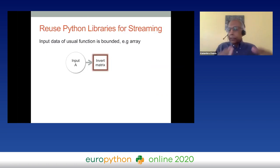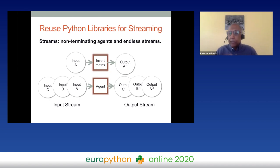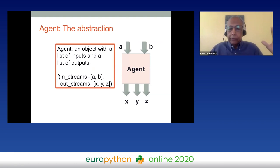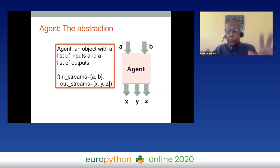A typical Python function takes input data such as an array, performs an operation like matrix inversion, generates an output, and then the function stops. By contrast, what we want is something persistent — something that lives forever. We want an agent that acquires data continuously and produces data continuously. The abstraction for an agent is a black box with inputs and outputs, and everything is persistent.